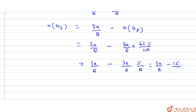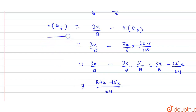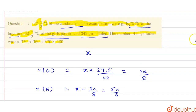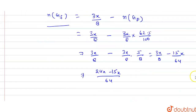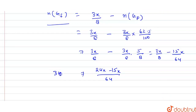We divide this case: 15 by 64. So the denominator will be 64, and here it will be 24x minus 15x, which gives 9x divided by 64, and this equals 342.